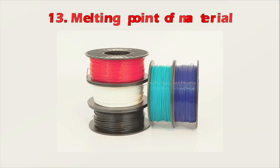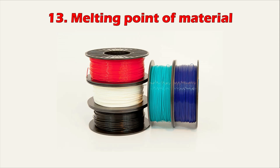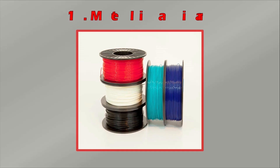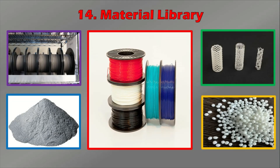Number thirteen: melting point of the material. Additive manufacturing is usually suitable for materials having a low melting point, whereas subtractive manufacturing can be applied for all solid materials irrespective of their melting point. Number fourteen: material library. There is a wide range of materials available for additive manufacturing, and they are increasing by the day — such as ferrous and non-ferrous metals, a variety of plastics, cermets, composites, biodegradable materials, and biocompatible materials for medical surgeries. They are available in all forms and states.